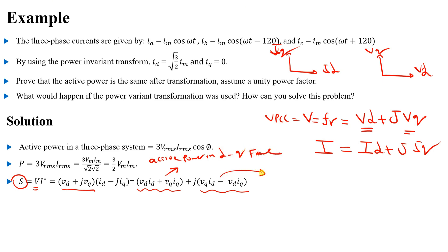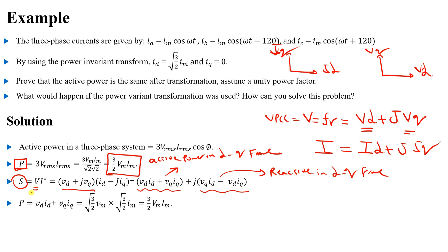The imaginary part represents reactive power in the dq frame. These equations are used in electrical power systems: active power P = 3 × Vrms × Irms × cos φ and reactive power Q = 3 × Vrms × Irms × sin φ. For our comparison, active power in the dq frame equals Vd·Id + Vq·Iq. Since iq = 0, the Vq·Iq term equals zero.